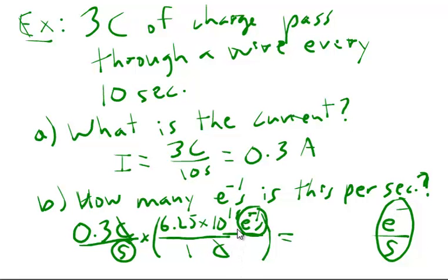So 0.3 times 6.25 times 10 to the 18. Punch it out. I'm just going to do 6.25 times 0.3. And that is 3.75. And then times 10 to the 18.